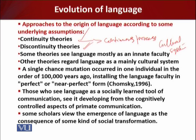Chomsky argues that a single chance mutation occurred in one individual around 100,000 years ago, installing the language faculty — a component of the mid-brain — in perfect or near-perfect form. That is what Chomsky believes.